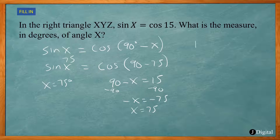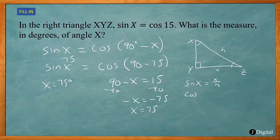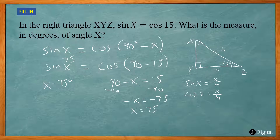Another way to solve this is to draw the right triangle with vertices x, y, and z. Sine of angle x is the opposite side over the hypotenuse. Cosine of angle z is also the adjacent side over the hypotenuse — the same ratio. So sine of x equals cosine of z. If z is 15 degrees, and x plus z must add up to 90, then 90 minus 15 is 75. So x equals 75 degrees.